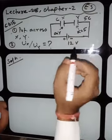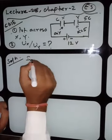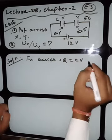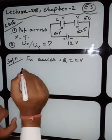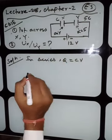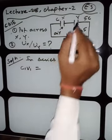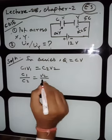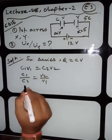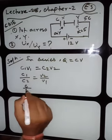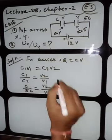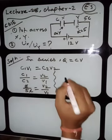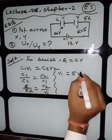The capacitors are already connected in series. In series, charge remains constant, so Q = C×V. That gives C1×V1 = C2×V2, which means C1/C2 = V2/V1. With C1 = C and C2 = 5C, we get C/5C = V2/V1, so V1 = 5×V2. This is one relation.